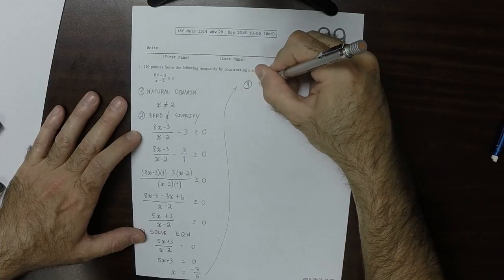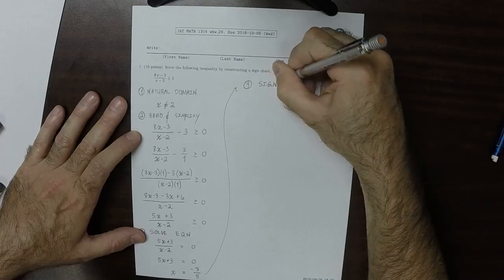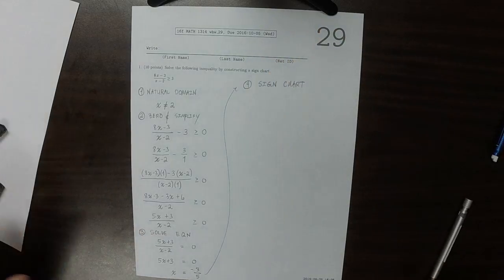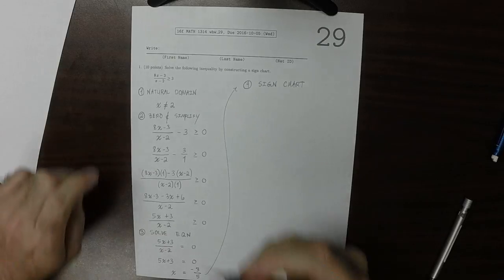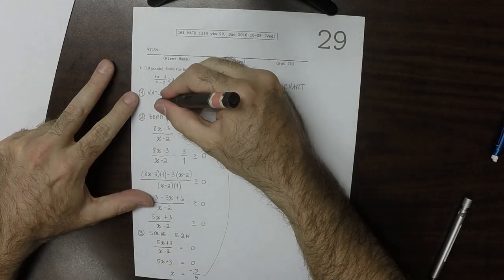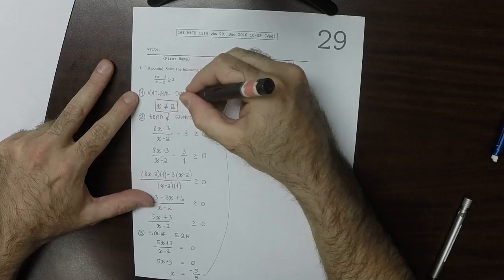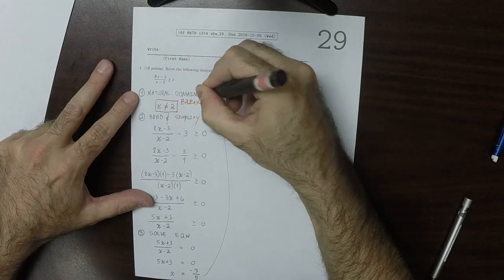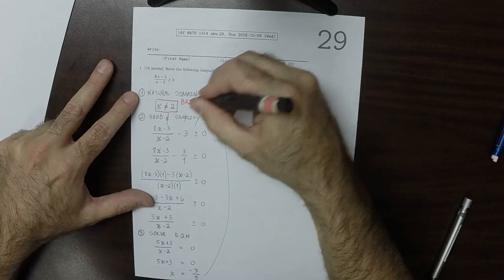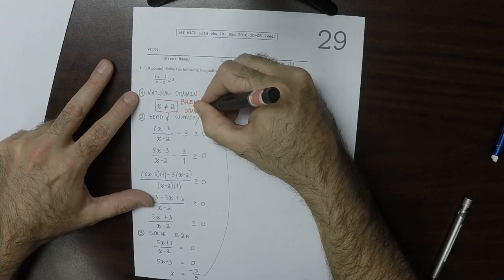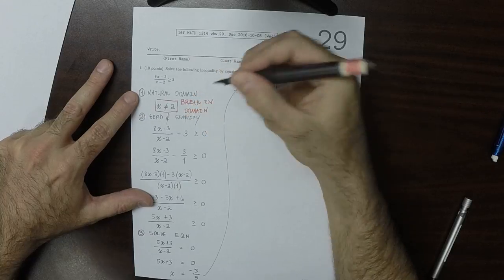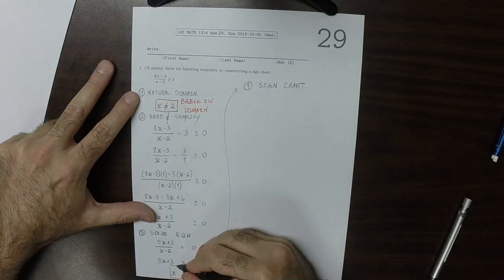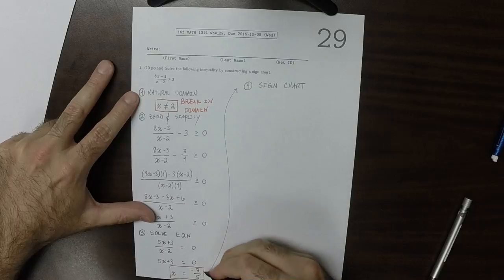So now step 4. Now here's where we make the sign chart. So what the sign chart does is it collects these things that we found. We found a break in the domain and we also found a 0.